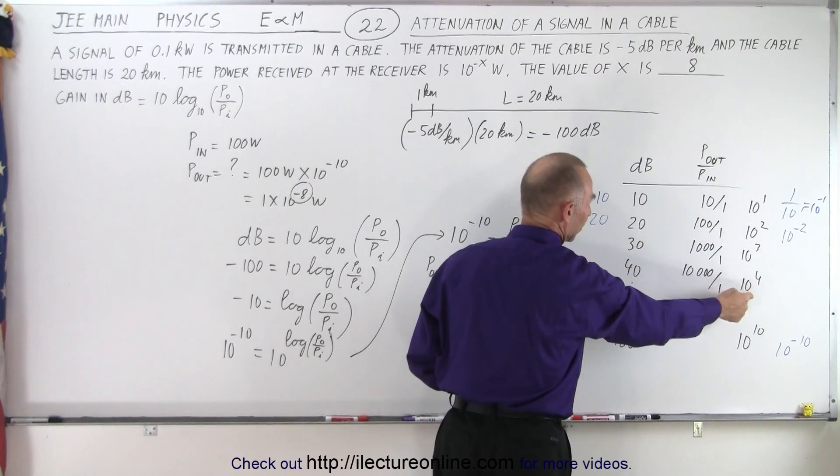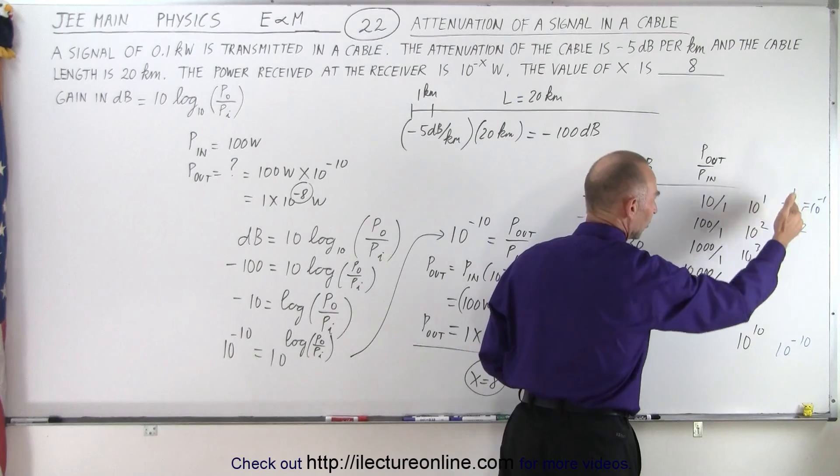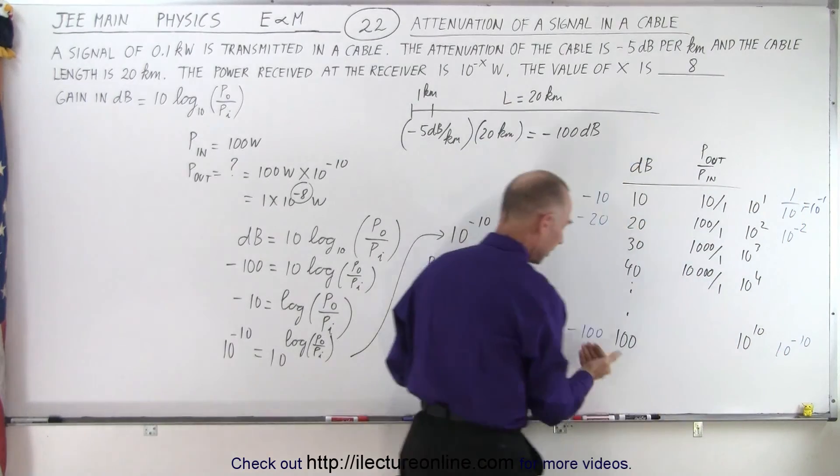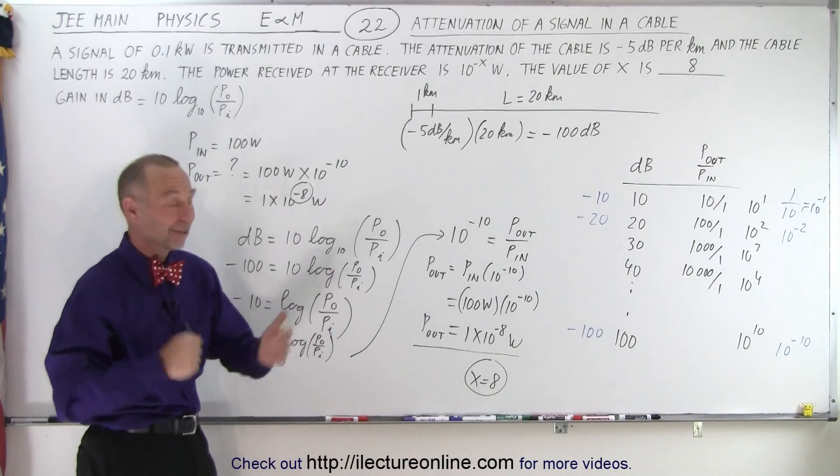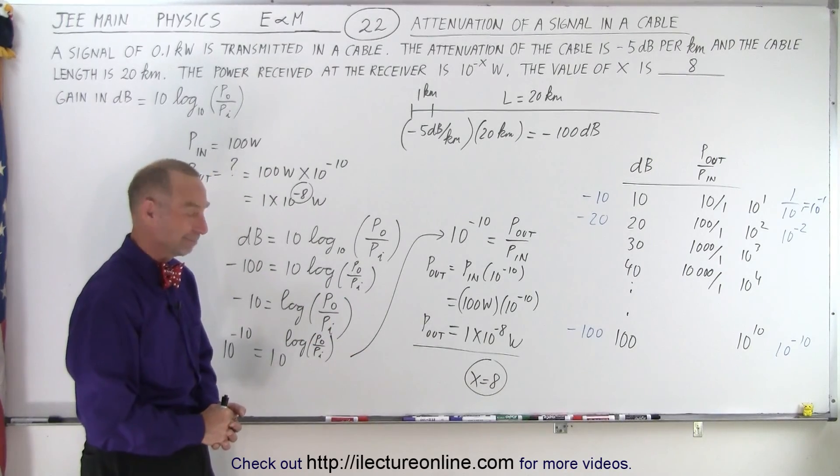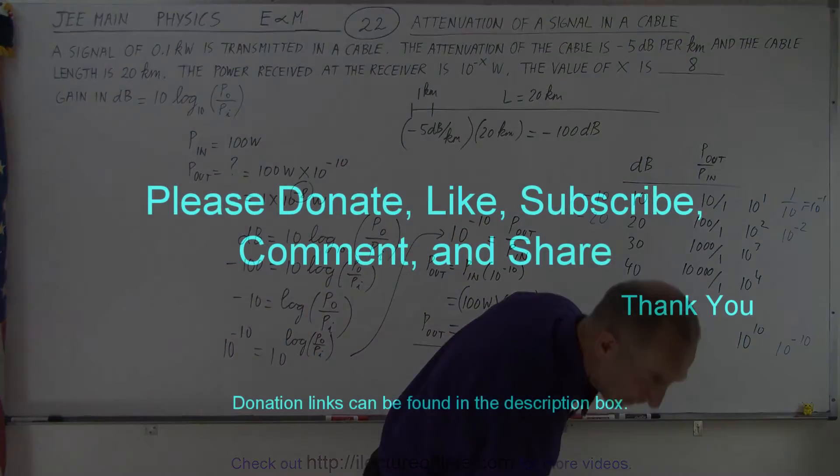When the decibel scale goes up from 10 to 100, that simply means we have an increase of 10^1, 10^2, 10^3, 10^4, or if it goes down then it becomes 10^(-1), 10^(-2), all the way down to 10^(-10) for an attenuation of 100 dB. And that is how it's done.